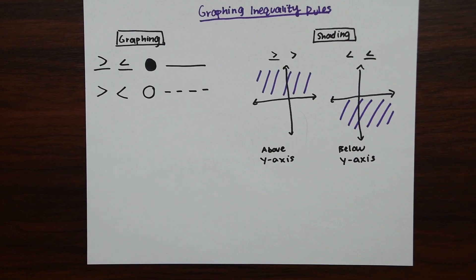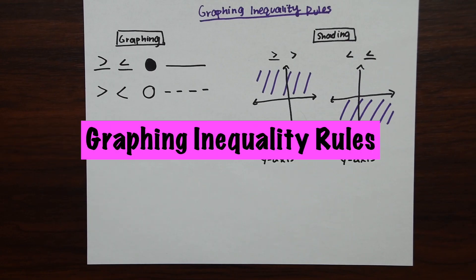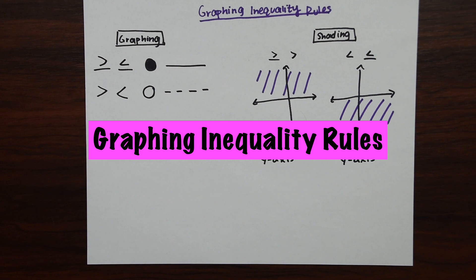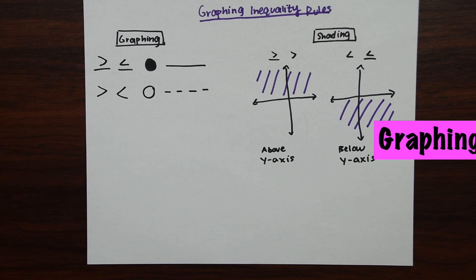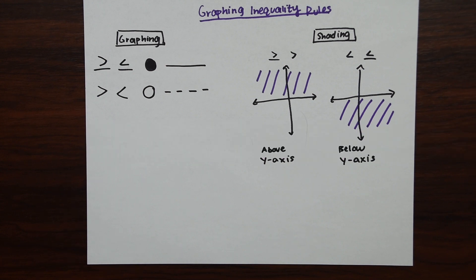When graphing linear inequalities we always want to treat the inequality as an equation of a line — a regular y equals mx plus b form where we have the slope and the y-intercept. But there are going to be a few different rules to keep track of.